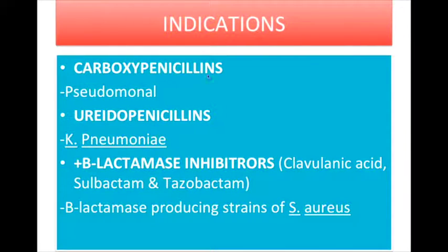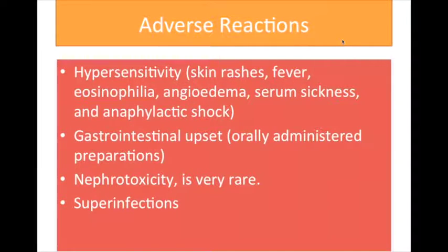Carboxypenicillins are used in the treatment of pseudomonal infections, while ureidopenicillins are active against gram-negative bacilli such as Klebsiella pneumoniae. Penicillins, together with beta-lactamase inhibitors such as clavulanic acid, sulbactam, and tazobactam, are active against beta-lactamase producing strains of S. aureus. Adverse reactions of penicillins: penicillins usually cause hypersensitivity, which includes skin rashes, fever, eosinophilia, angioedema, serum sickness, and anaphylactic shock. They can also cause gastrointestinal upset when orally administered. Nephrotoxicity can also occur but is very rare. Superinfections can also occur.